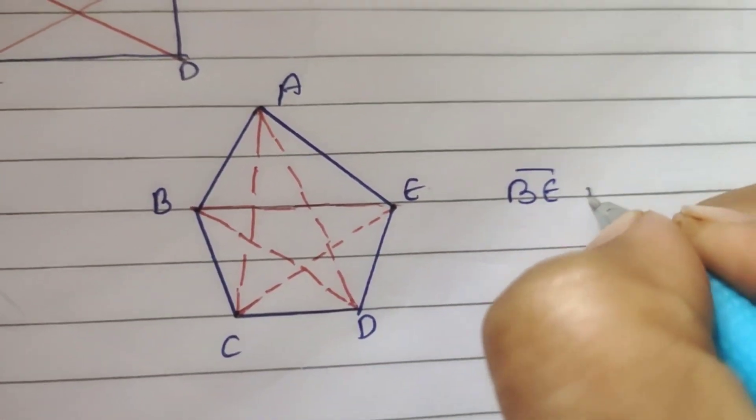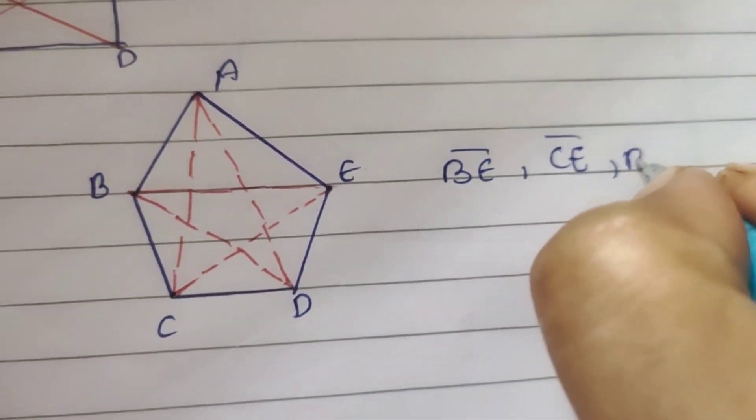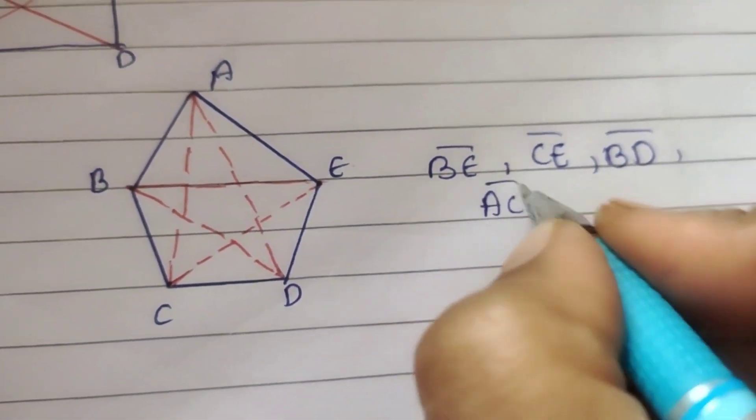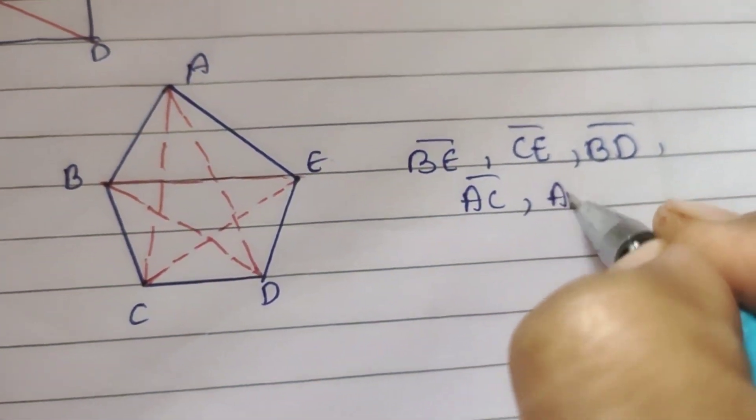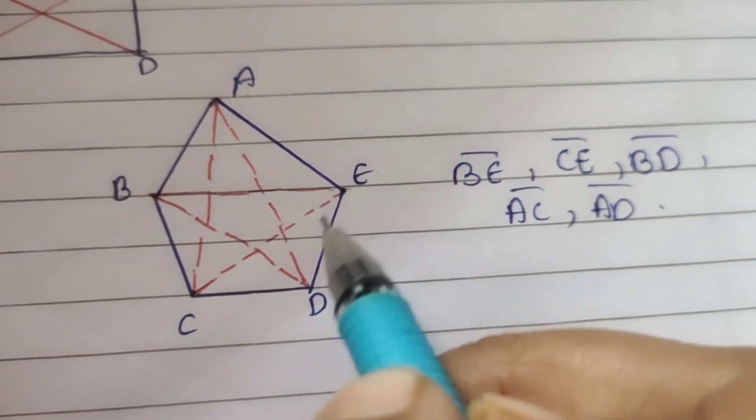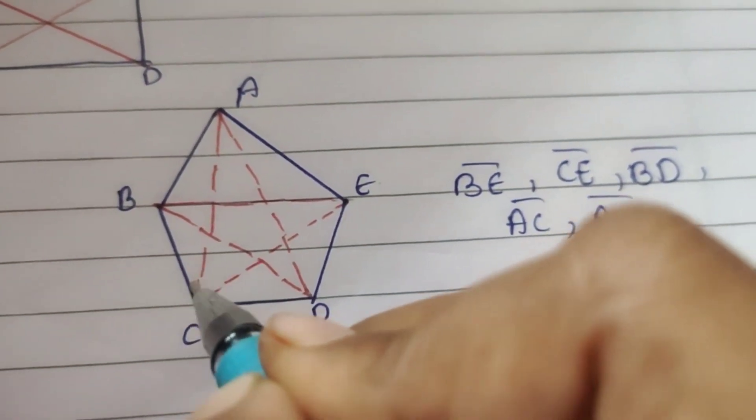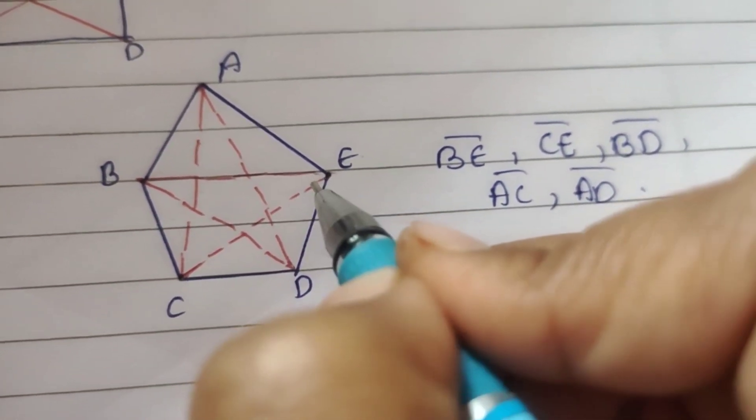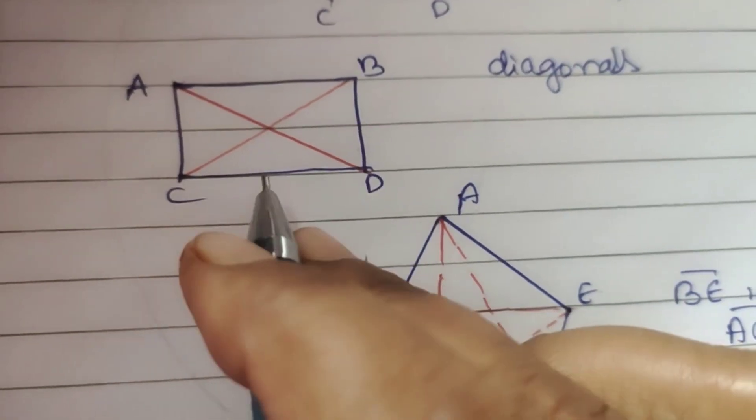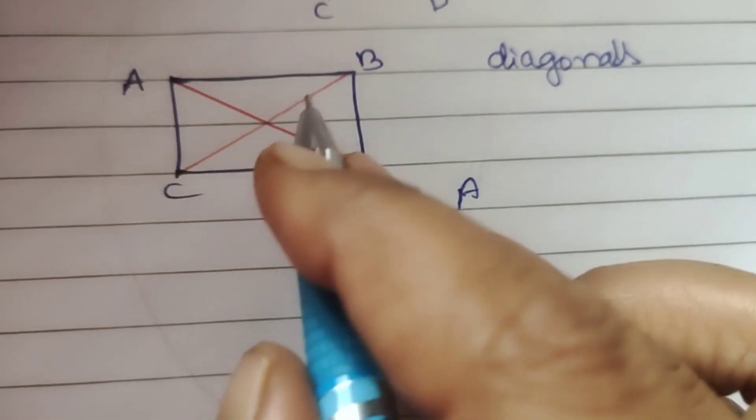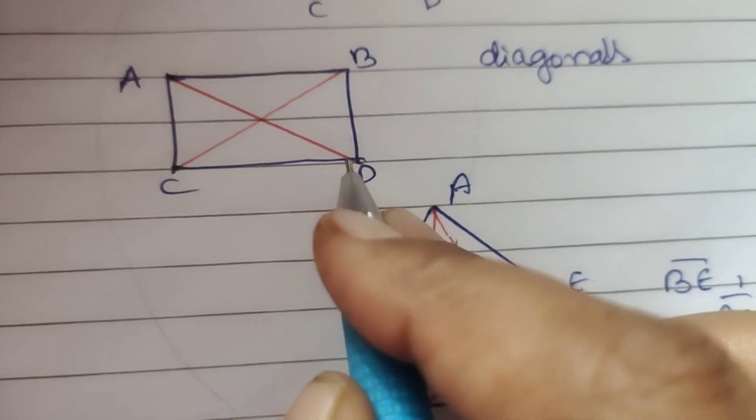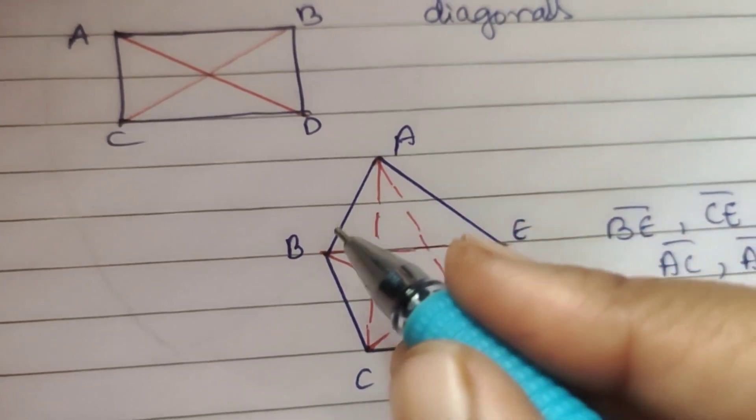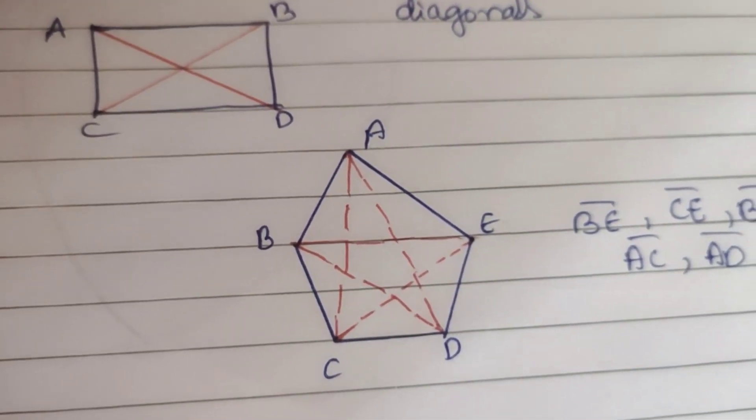So diagonals are formed when you join any two non-adjacent vertices. In case of rectangle, diagonal exactly divides into two half parts, but in other cases it may not. That's what diagonals are.